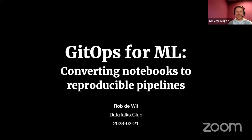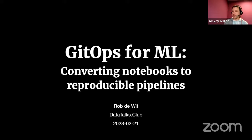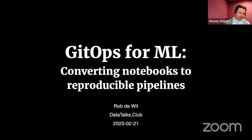Hi everyone, welcome to our event. This is a workshop where we will see how to use DVC and GitOps practices for converting Jupyter notebooks to pipelines. During the workshop, if you have any questions, please use the live chat. I will be monitoring your questions, and if I see something relevant to what Rob is showing, I will interrupt him and ask. The floor is yours — please start.